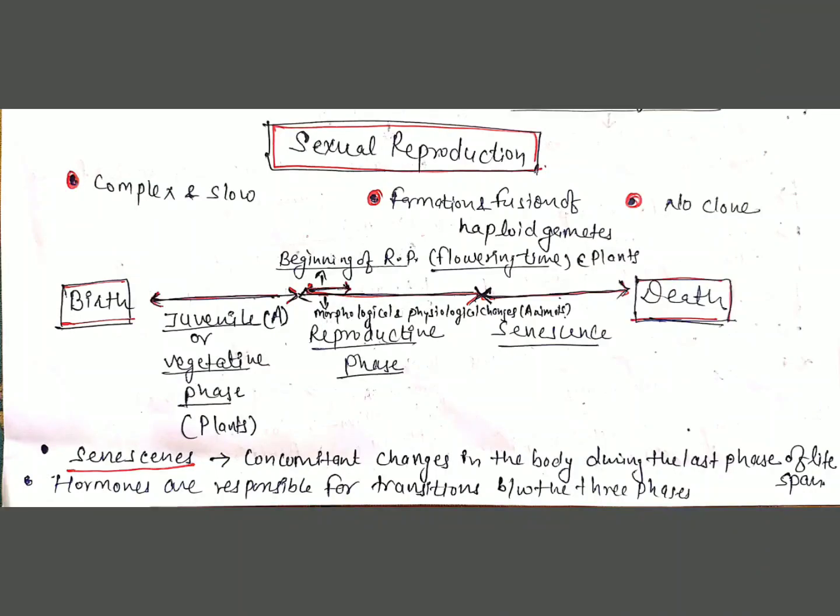Now we will discuss sexual reproduction. Sexual reproduction is an elaborate, complex, and slow process compared to asexual reproduction. It involves the formation and fusion of haploid gametes, and because two different sets of chromosomes are brought together, offspring are not identical to their parents — so no clones are formed.